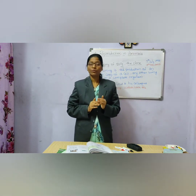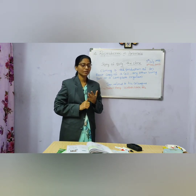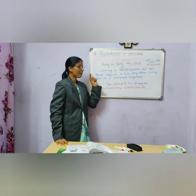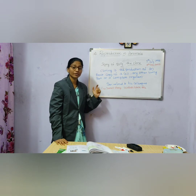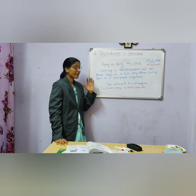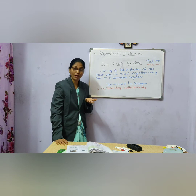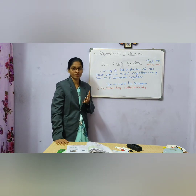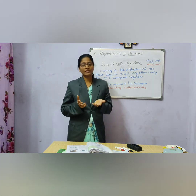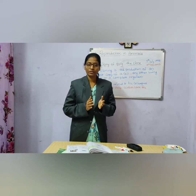Now we will see the cloning method. Cloning is the process of production of an exact copy of a cell, a living part, or completely an organism — simply, a xerox copy of a cell, a living part, or any organism. The story of Dolly: Dolly was the first animal produced by cloning.